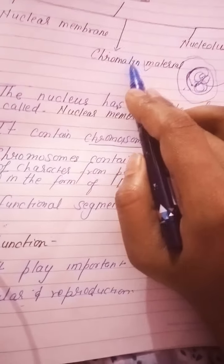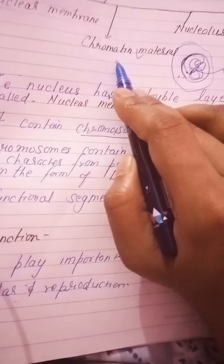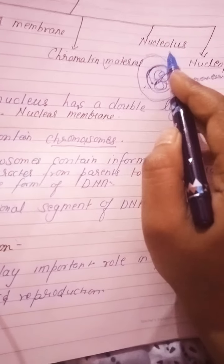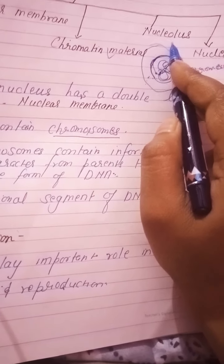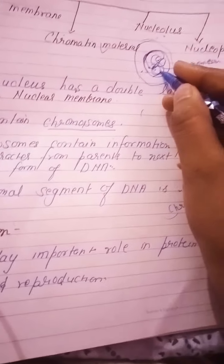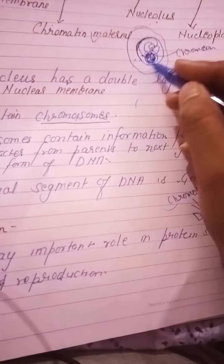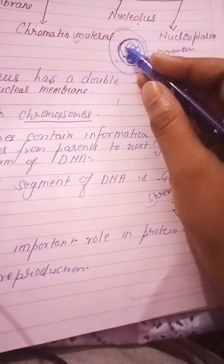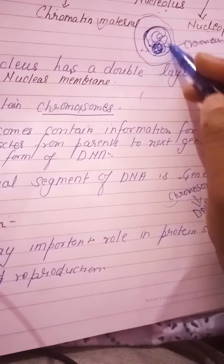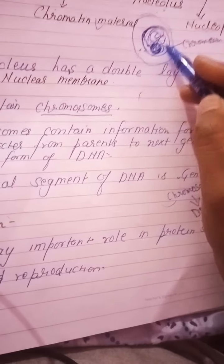To summarize: the nuclear membrane is the outer covering of the nucleus. Chromatin material is a thread-like form of DNA which condenses into chromosomes. Chromosomes transfer your parents' characters. The nucleolus helps in ribosome synthesis and therefore helps in protein synthesis in the cell. The nucleoplasm is a liquid jelly-like substance inside the nucleus, like the cytoplasm. Next we will learn about the cytoplasm present in the nucleus.